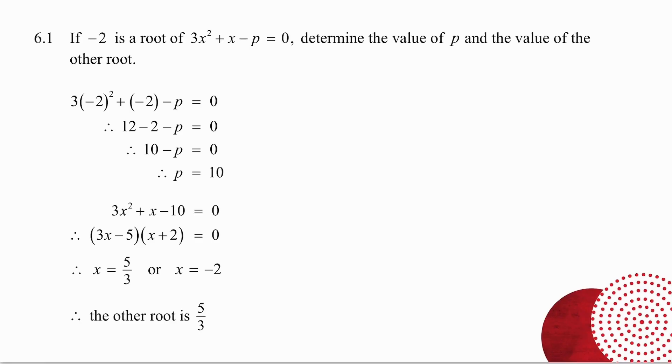A root of an equation is an x value that makes the equation true. So if minus two is a root, it means it is a value of x that will make this equation true. So what I do in place of x, I put minus two and I solve for p. I now know that p is equal to 10, which means my equation becomes 3x squared plus x minus 10 equals zero.